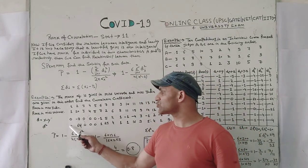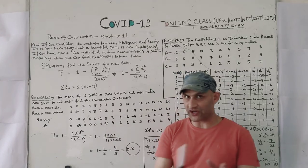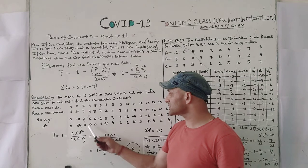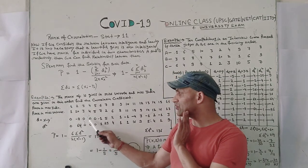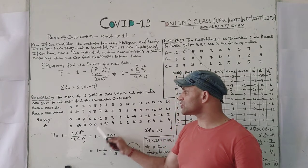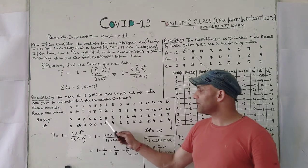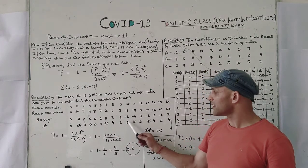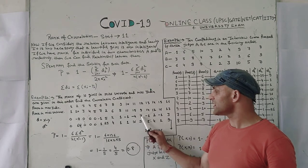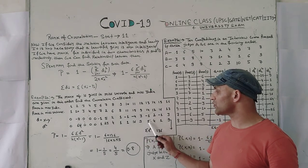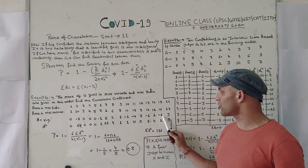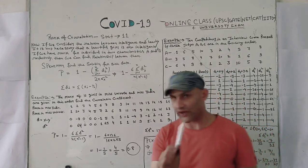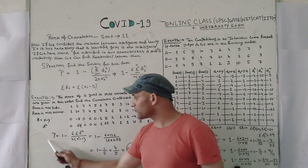Continuing d values: 9-8=1, 10-11=-1, 11-15=-4, 12-9=3, 13-14=-1, 14-12=2, 15-16=-1, 16-13=3. These are the subtractions between the two variables. Now we calculate d squared: 0²=0, (-8)²=64, 0²=0, 0²=0, 0²=0, (-1)²=1, 5²=25, 2²=4, 1²=1, (-1)²=1, (-4)²=16, 3²=9, (-1)²=1, 2²=4, (-1)²=1, 3²=9.